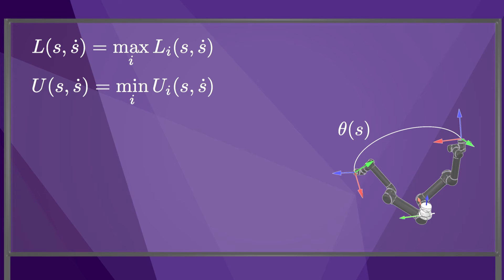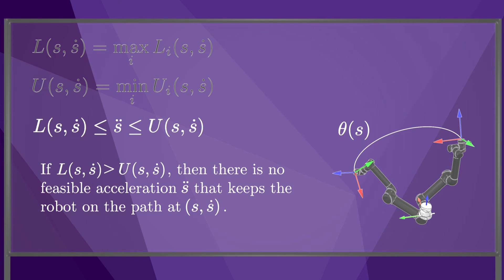We can now express the constraints on the robot's acceleration along the path compactly as s double dot is greater than L(s, s dot) and less than U(s, s dot). At some states, L may actually be greater than U, and in this case there is no feasible acceleration that keeps the robot on the path.